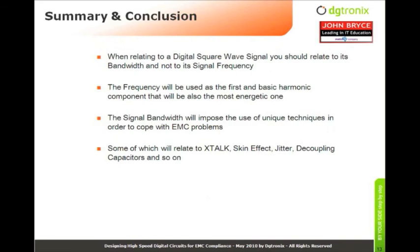To summarize: when relating to a digital square wave signal, you should relate to its bandwidth and not to its signal frequency. The frequency serves as the first and most basic harmonic component and represents the most energetic component. The signal bandwidth imposes the use of unique techniques to cope with EMC problems, since higher frequency components in the PCB and medium lead to more serious EMC problems — some of which relate to crosstalk, skin effect, jitter, decoupling capacitors, and more.